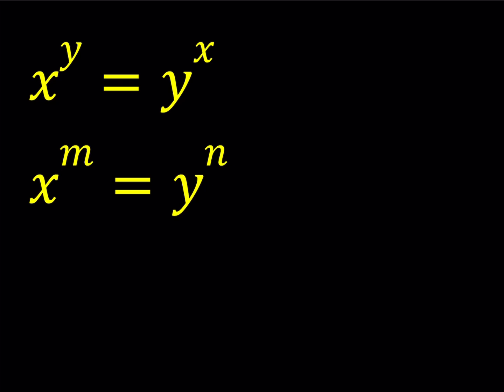First of all, m and n are given numbers or you can call them parameters. Basically we're going to solve for x and y and the answer is going to be in terms of m and n.